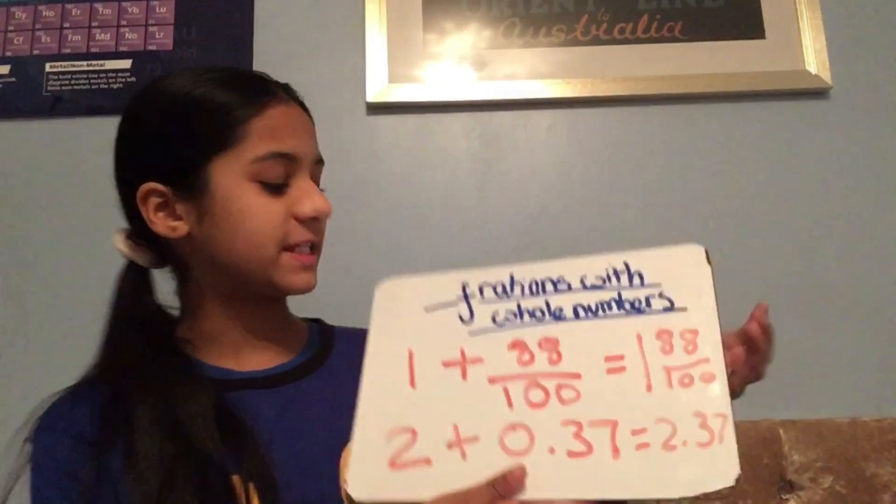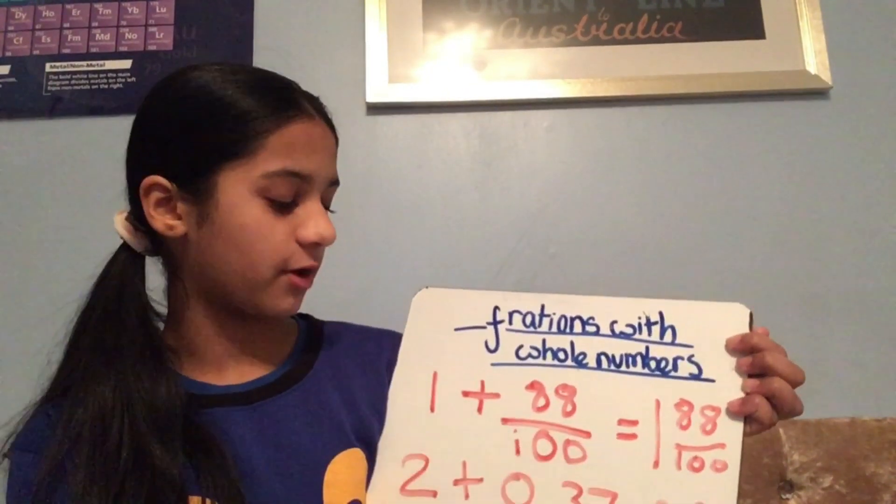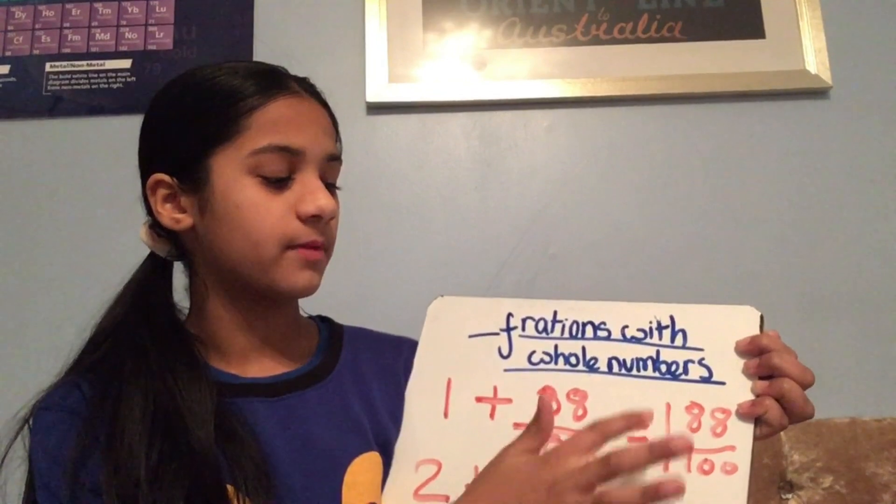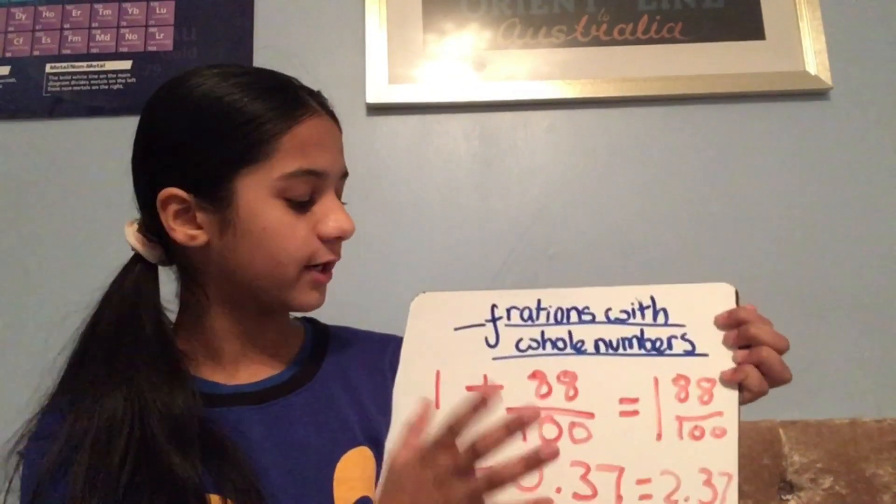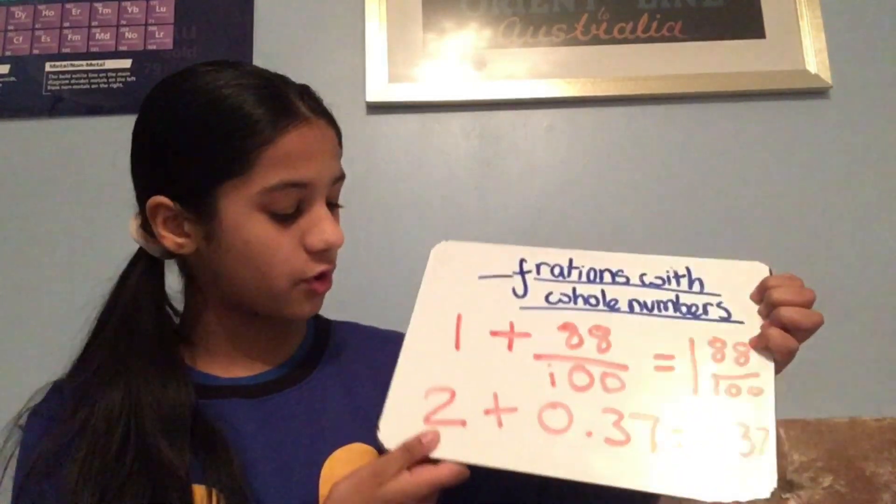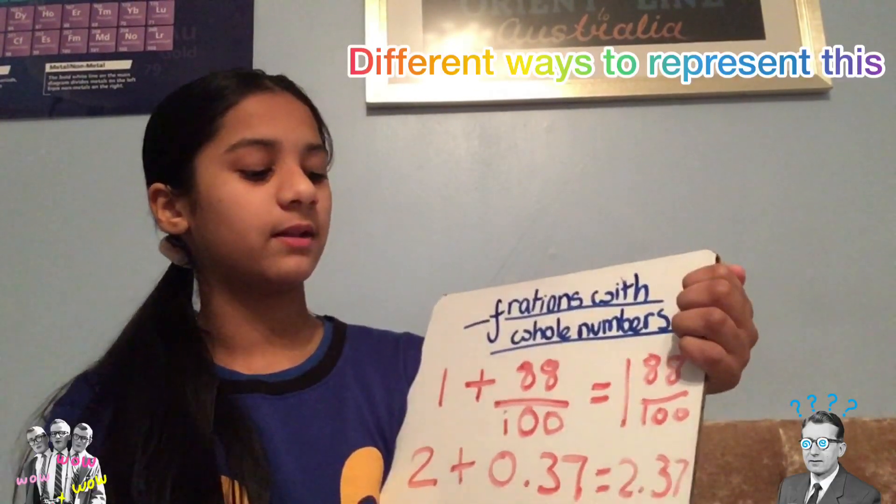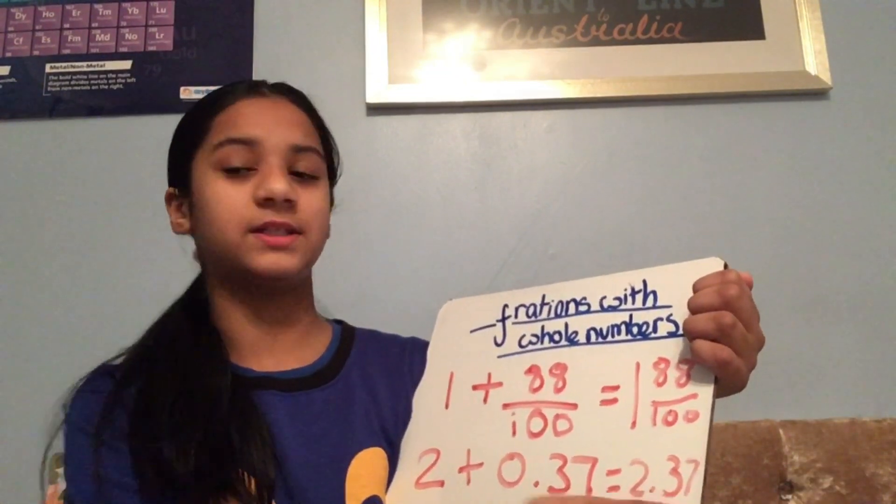Now, you can also represent it like this. 1 add 88 over 100 equals 1 88 over 100. You can just partition it this way. Or you can do 2 add 0.37 equals 2.37.